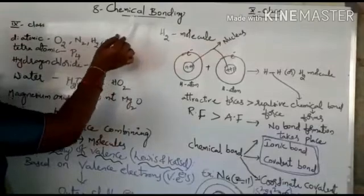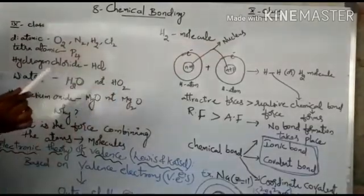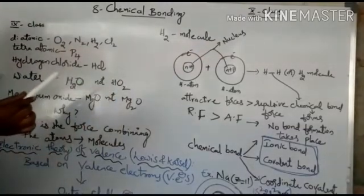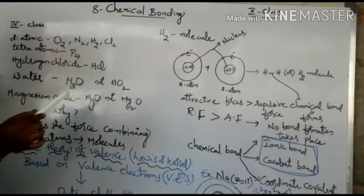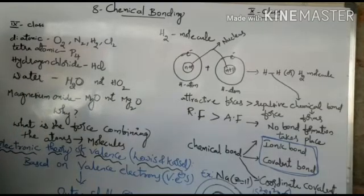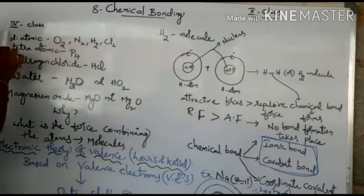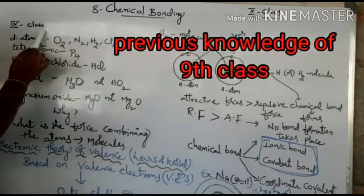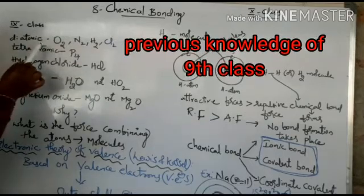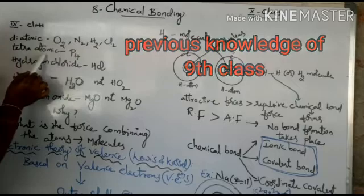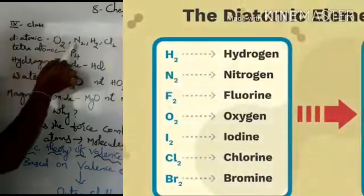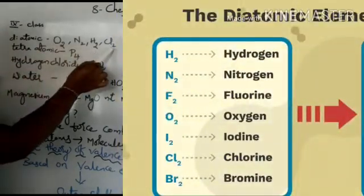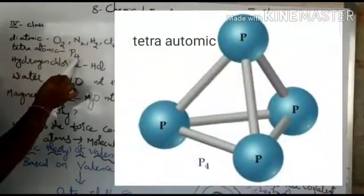Before going to this chapter, you must be thorough with atomic structure, periodic properties, and the electronic configuration of the first 30 elements. In 9th class you already learned about diatomic molecules like O2, N2, H2, Cl2, and tetraatomic molecules like P4.